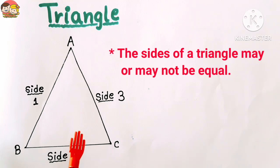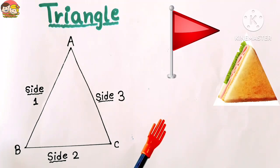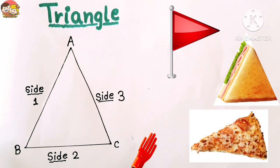Now, examples of triangle shapes in real life: like a temple flag, sandwich, a piece of pizza, etc.